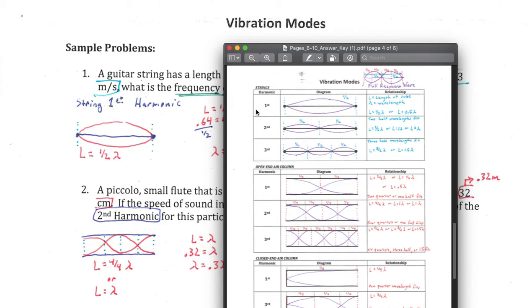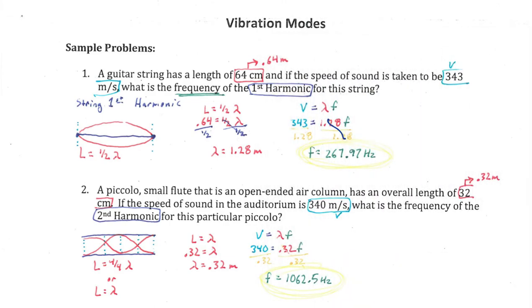Once we knew that this was a first harmonic, we compared it to some formulas that we had for first, second, third harmonics on strings. From there I was able to figure out the length of the wavelength, and then from there I had to figure out my frequency by putting it into a formula that relates velocity, wavelength, and frequency.